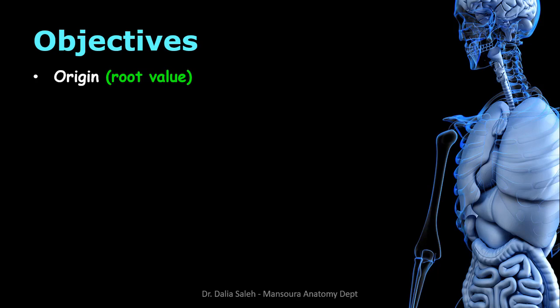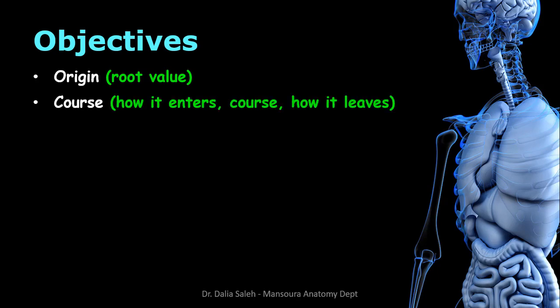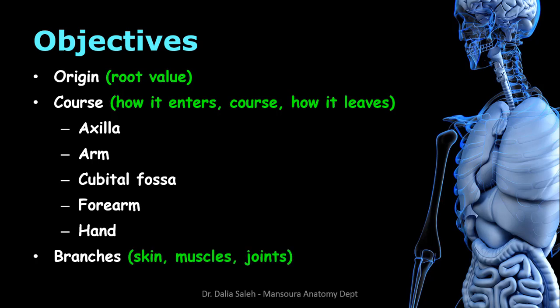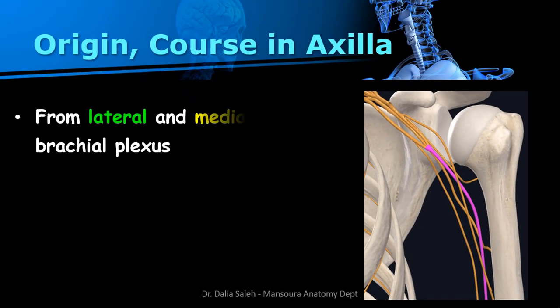The objectives of my presentation will be: first, I will talk about the origin of the median nerve, then its course in the axilla, arm, cubital fossa, forearm, and in the hand. Then I will talk about its branches — the cutaneous, muscular, and articular branches. Finally, I will talk about the median nerve injury.